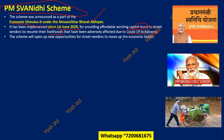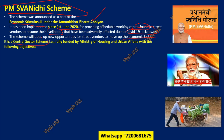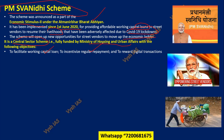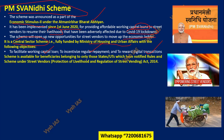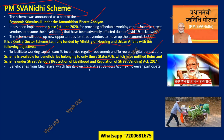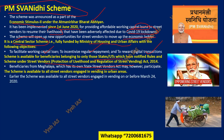The scheme opens new opportunities for street vendors to move up the economic ladder. It is a Central Sector Scheme — fully funded by the Centre — under the Ministry of Housing and Urban Affairs, with the following objectives: to facilitate a working capital loan, to incentivize regular repayment, and to reward digital transactions. The scheme is available for beneficiaries only in states and UTs that have notified rules and schemes under the Street Vendors (Protection of Livelihood) Act; states like Meghalaya with their own act can also participate.